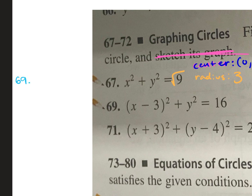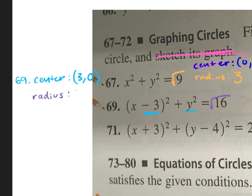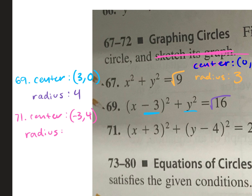For problem 69: the center — we change the sign, so since it's minus 3 it becomes positive 3, and we're not adding anything to y, so the center is (3, 0). The radius is the square root of 16, which is 4. For problem 71: the center is (-3, 4) and the radius is the square root of 25, which is 5.